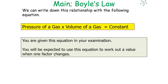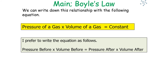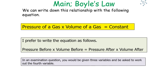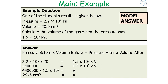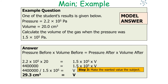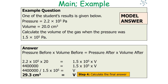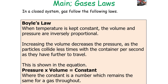You'll be expected to use Boyle's law equation in your examination and you are given it. I like to write it as: pressure before times volume before equals pressure after times volume after, because pressure times volume for a gas always gives the same constant value. In an examination question you'll be given three variables and asked to work out the fourth. Write out your equation, substitute the values in, make the unknown the subject, then calculate your final answer with correct significant figures and a unit.